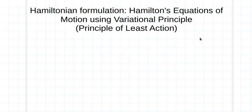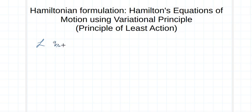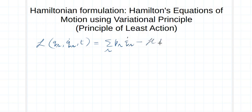In the earlier lecture I derived Hamilton's equations of motion considering the Lagrangian. Now I will again write the same equations — Hamilton's equations of motion — but this time using the variational principle, or in other words, the principle of least action. For this, consider the Lagrangian defined via the Legendre transformation, so that we can relate the Lagrangian with the Hamiltonian: L(q_r, q_r_dot, p) = summation over r of p_r * q_r_dot minus H(q_r, p_r).